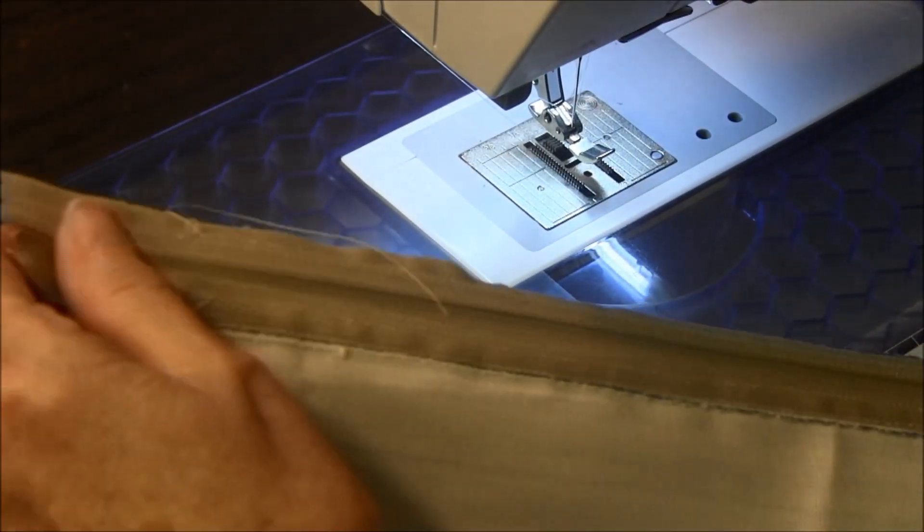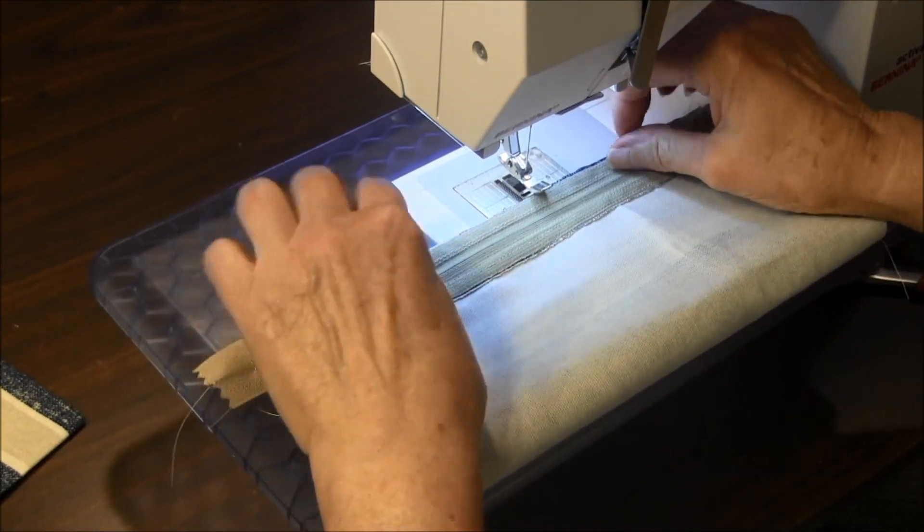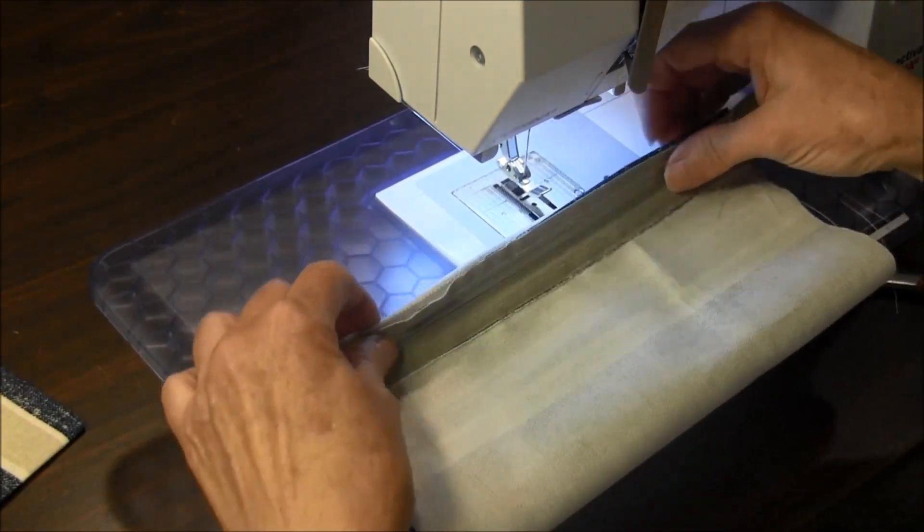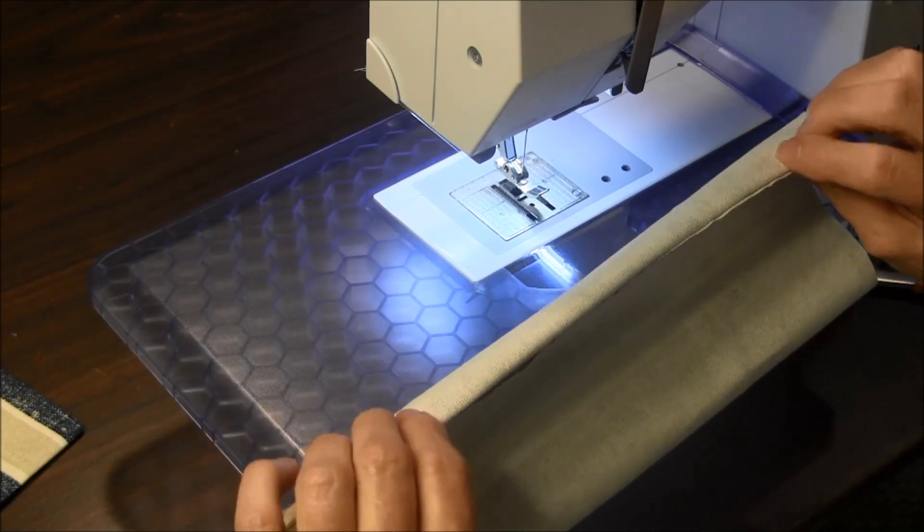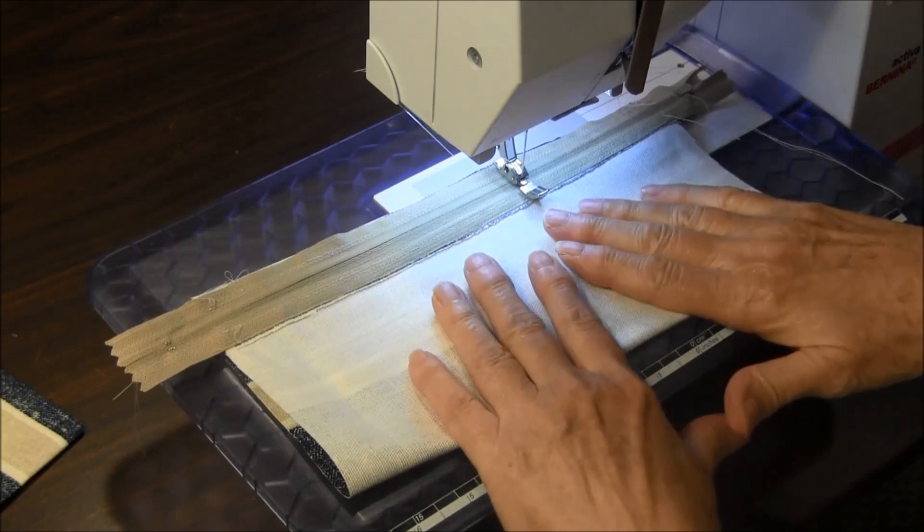Close the zipper. Now we're going to press it and we're going to align the top fold of the fabric right where the zipper is and we're going to press it flat.